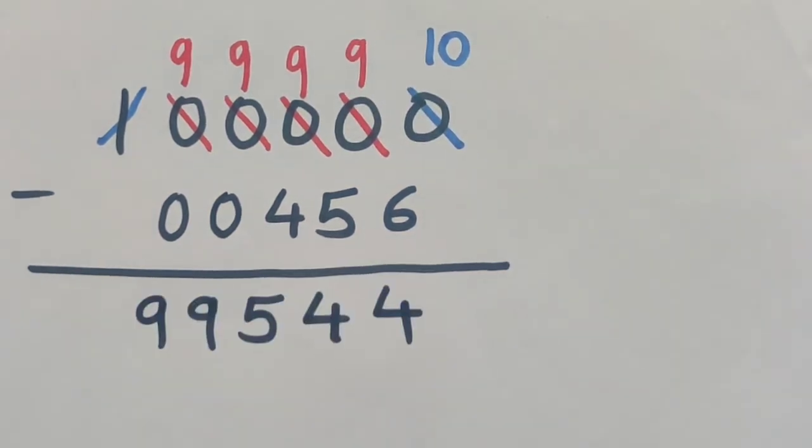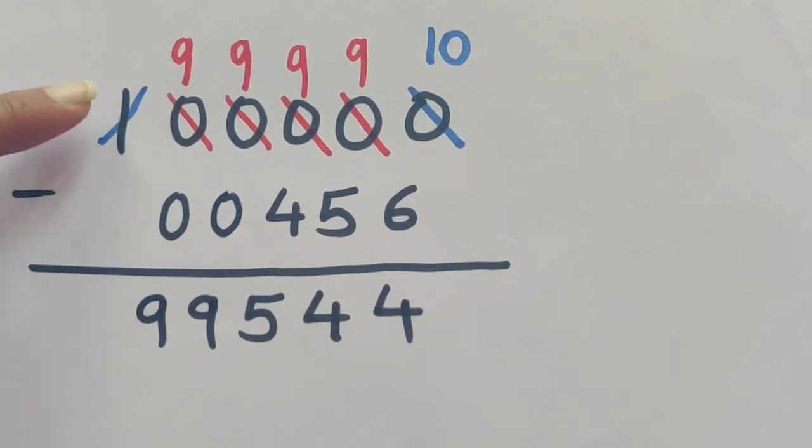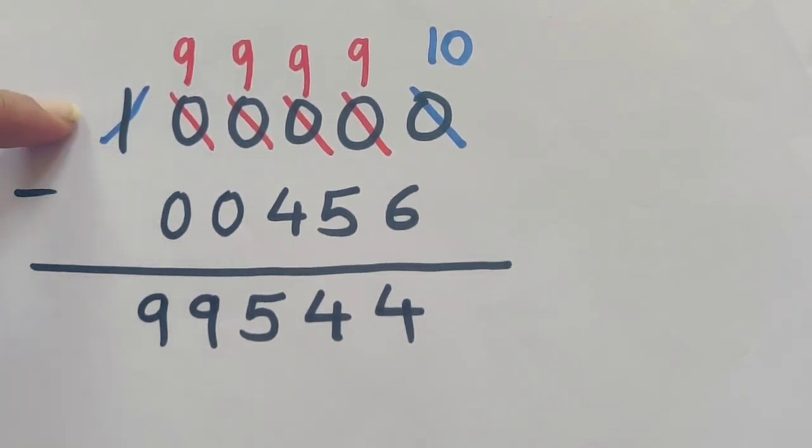Now simply on subtracting we have the number. Note that the answer which you will get will always equal the number of zeros in your higher number. This was the short trick to remember how to subtract any number from thousands or ten thousands.